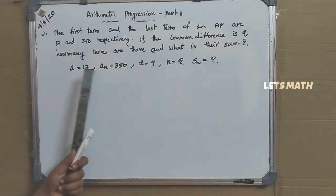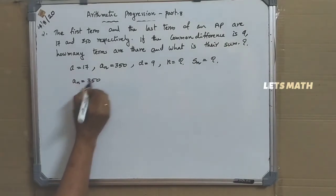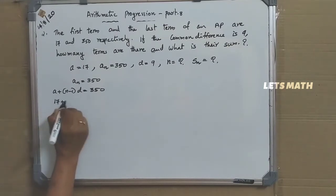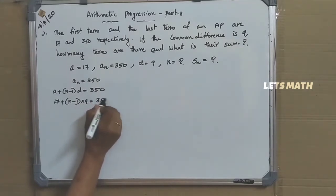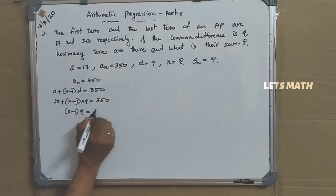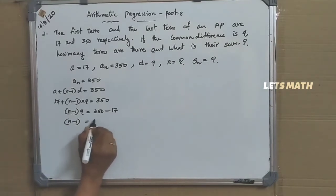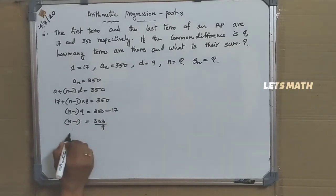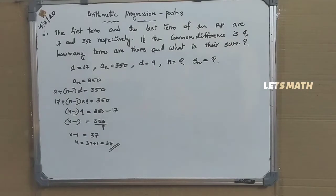Since A and AN are given, we start with AN equal to 350. That is A plus N minus 1 into D equal to 350. A is 17, so 17 plus N minus 1 into 9 equal to 350. N minus 1 into 9 equals 333, so N minus 1 equals 333 divided by 9, giving N minus 1 equal to 37. So number of terms N equals 38.